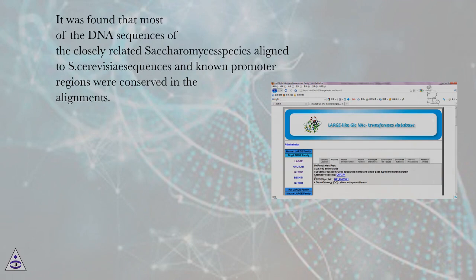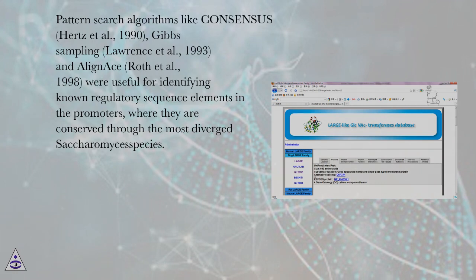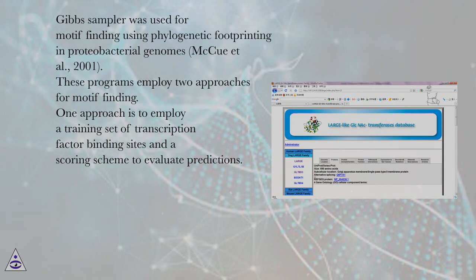It was found that most of the DNA sequences of the closely related Saccharomyces species aligned to S. cerevisiae sequences, and known promoter regions were conserved in the alignments. Pattern search algorithms like Consensus (Hertz et al., 1990), Gibbs Sampling (Lawrence et al., 1993), and AlignACE (Roth et al., 1998) were useful for identifying known regulatory sequence elements in promoters where they are conserved through the most diverged Saccharomyces species. Gibbs Sampler was used for motif-finding using phylogenetic footprinting in proteobacterial genomes (McHugh et al., 2001).